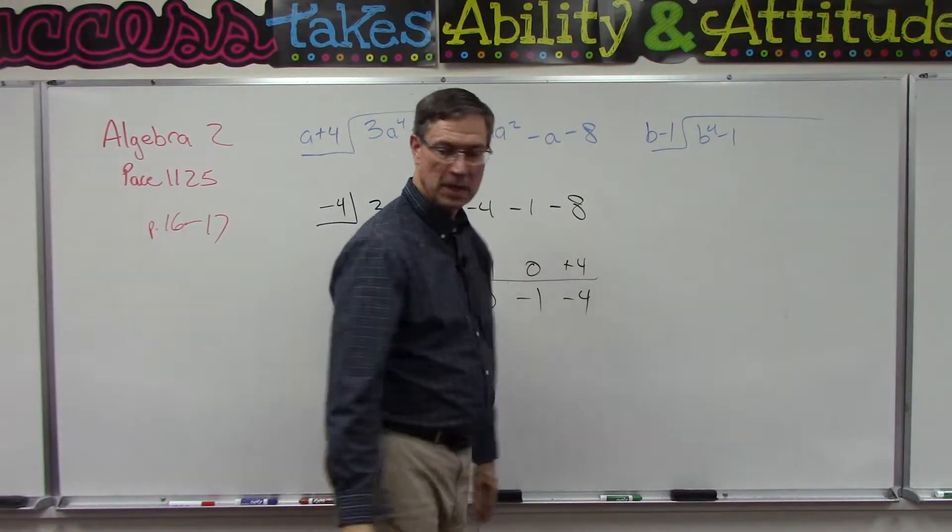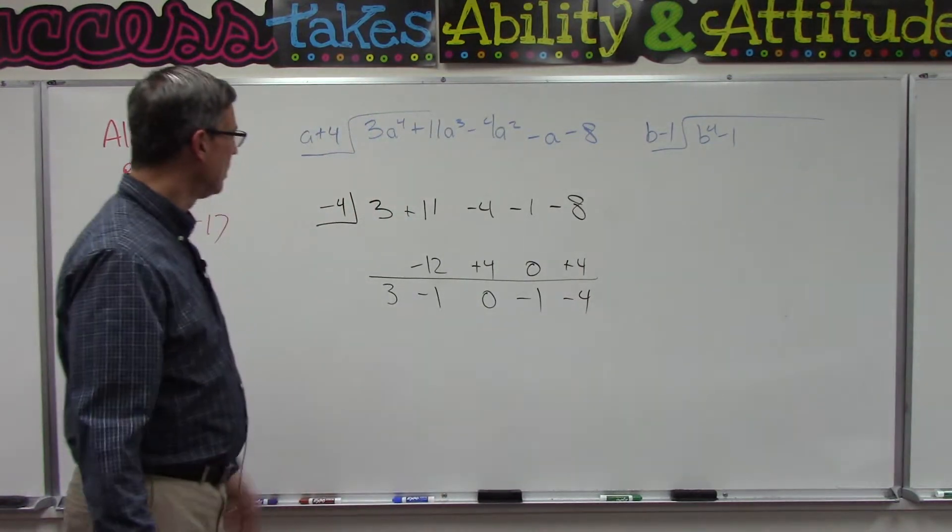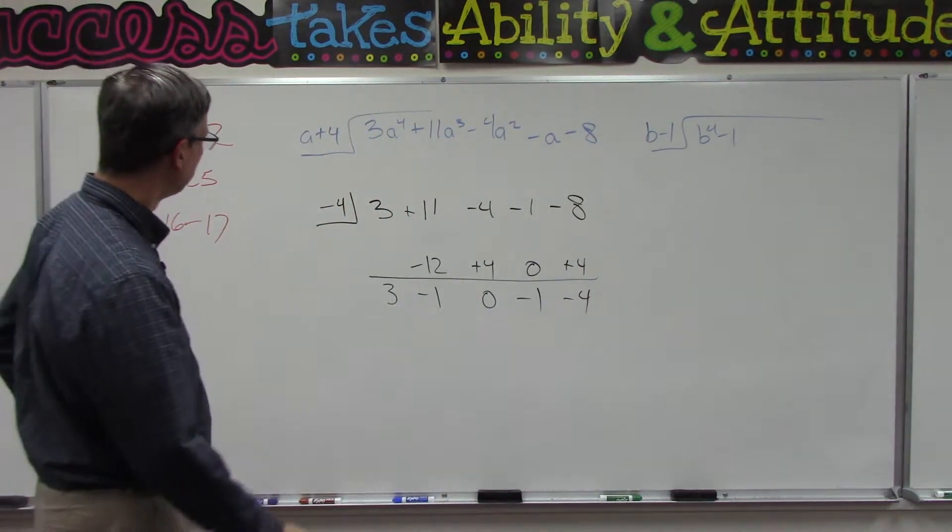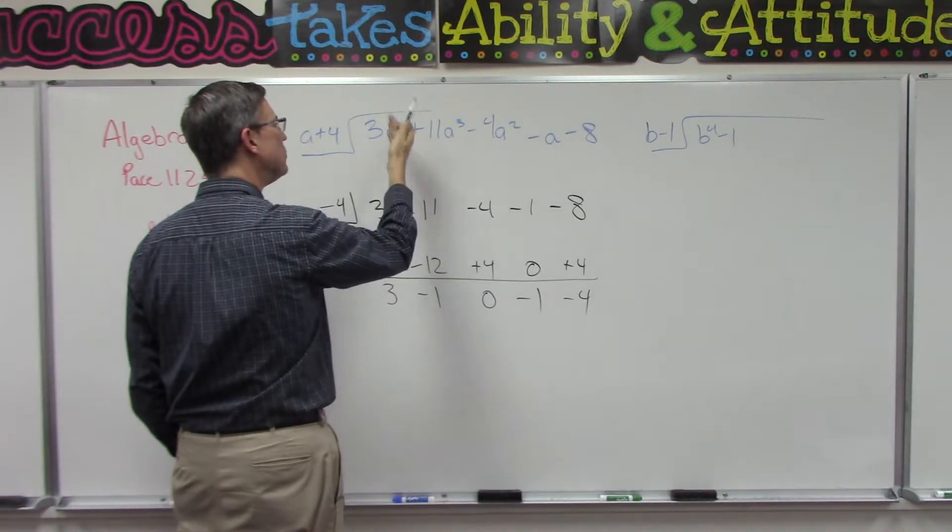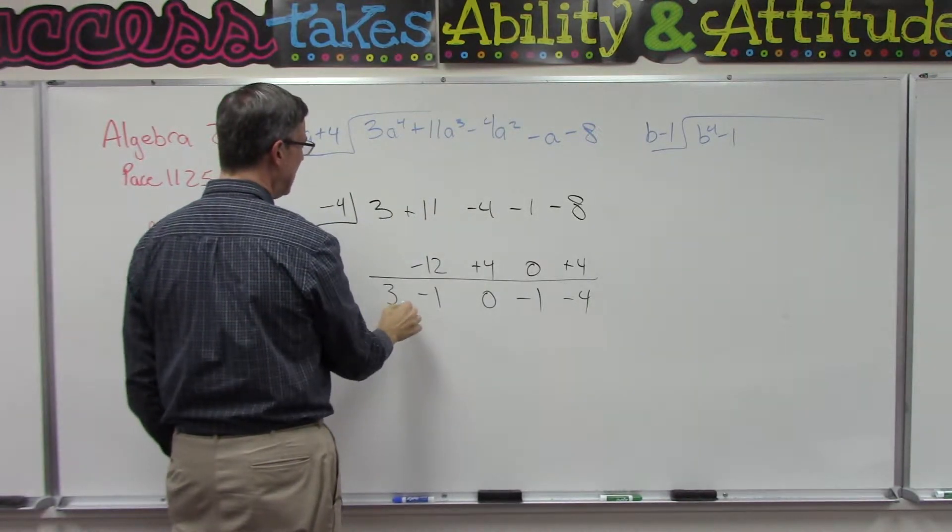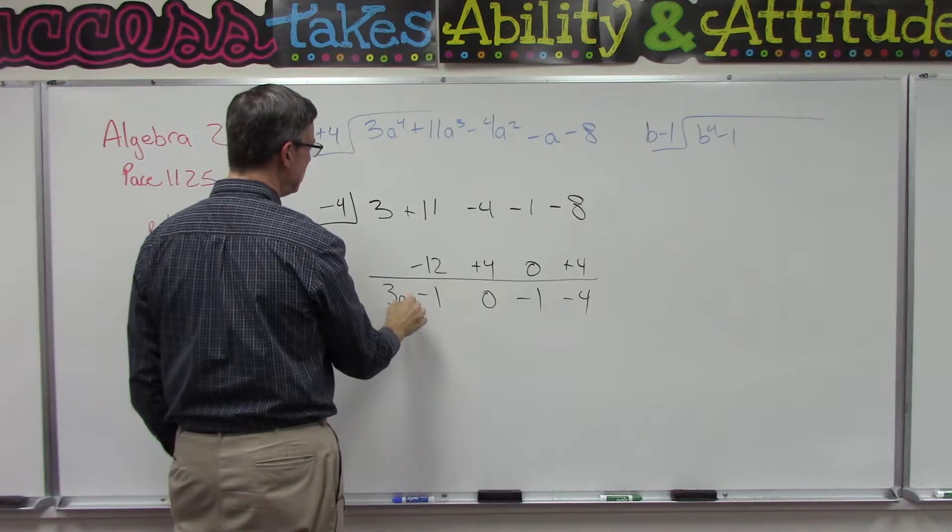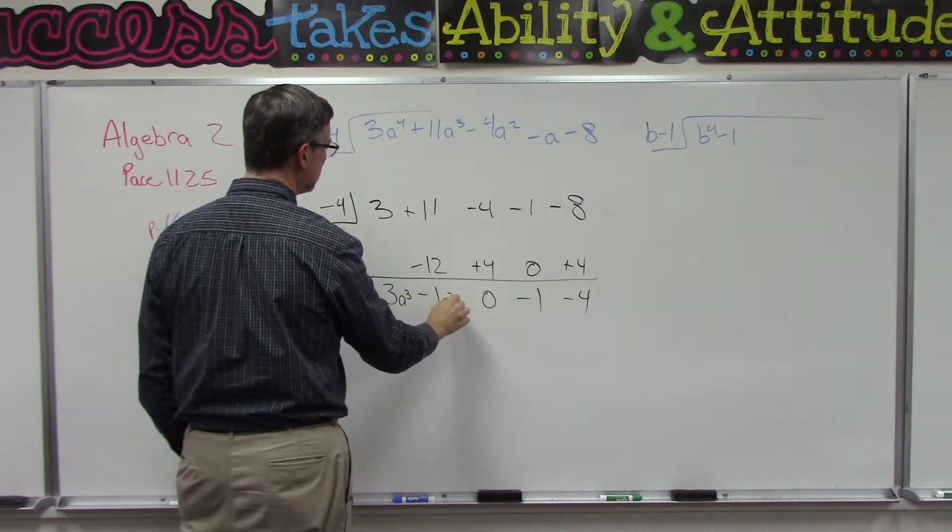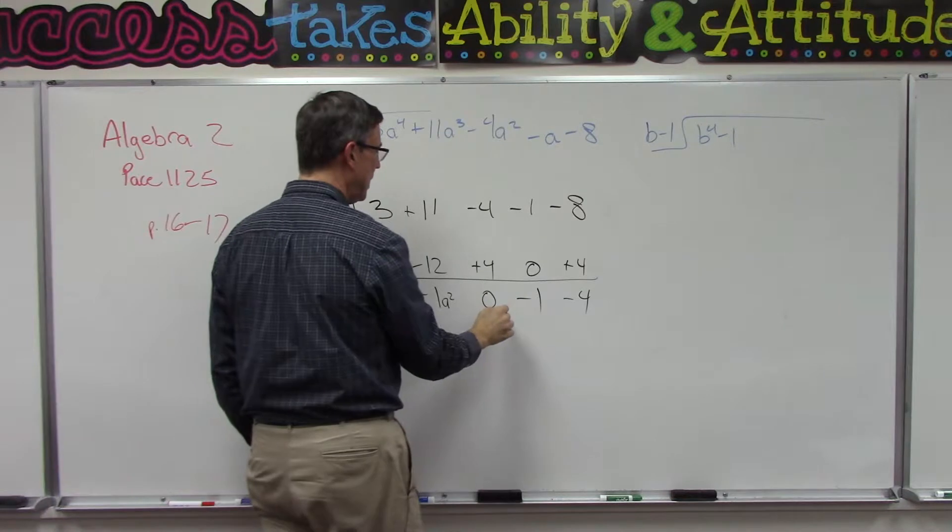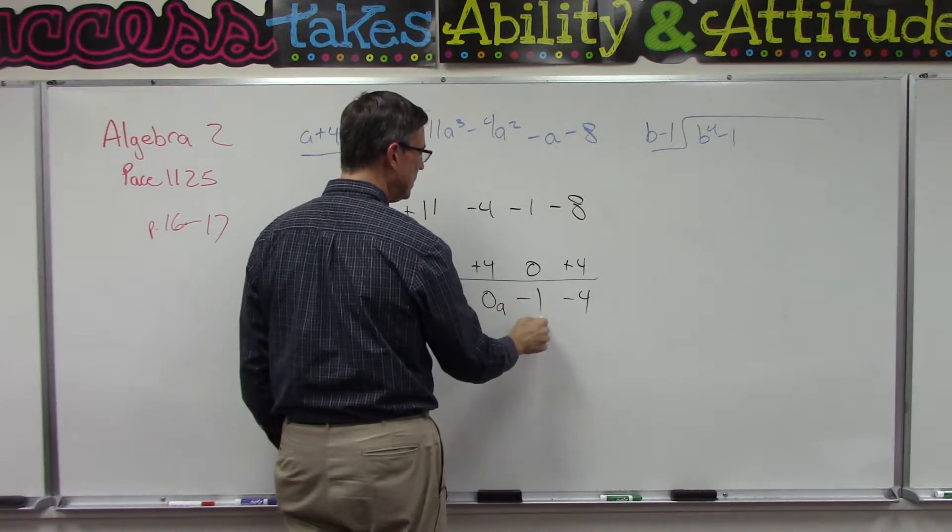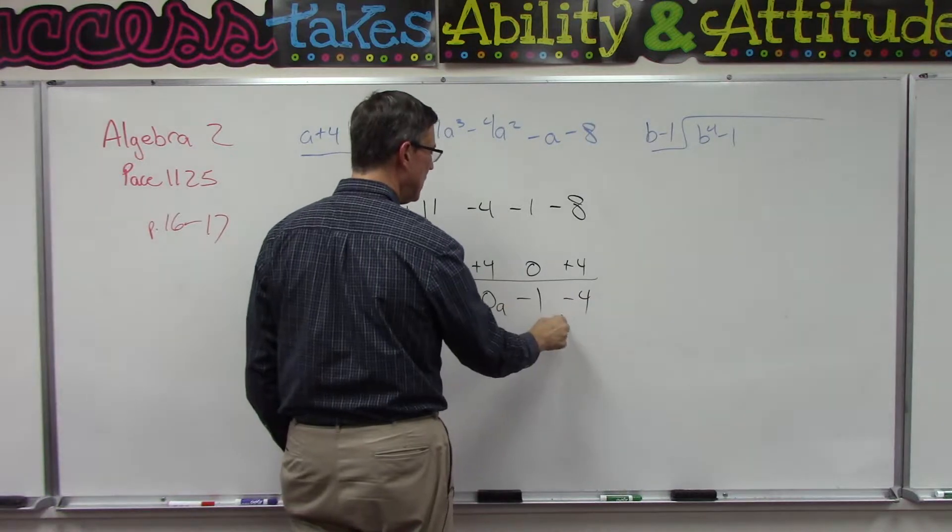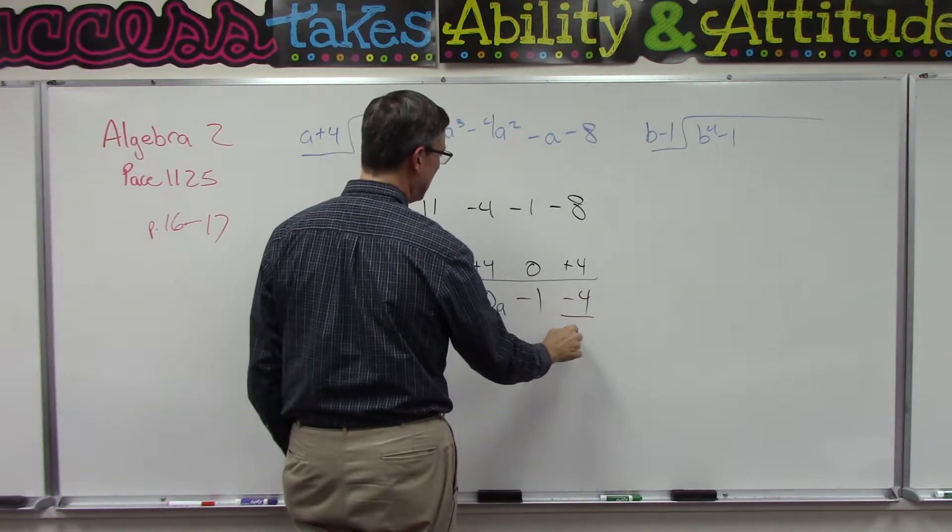What do we do with that? How do we turn that into an answer? Whatever this exponent was, we're going to subtract 1 from that. So the answer is going to be a to the third, a squared, a, and then this is just the constant, and then we'll put this over the divisor, which was a plus 4.